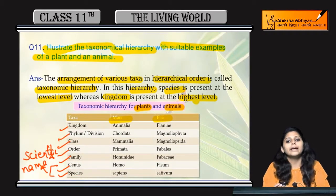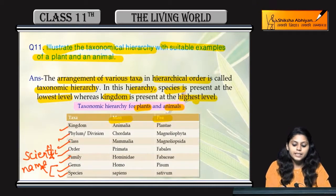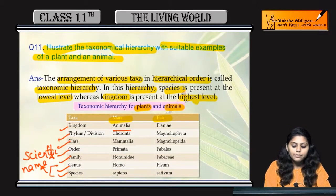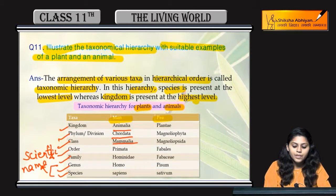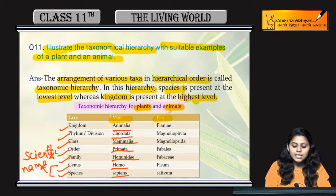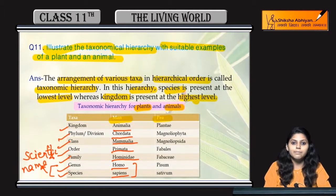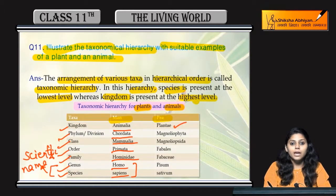For human beings, the kingdom is Animalia, phylum is Chordata, class is Mammalia, order is Primata, family is Hominidae, genus is Homo, and species is sapiens. Therefore, human beings are called Homo sapiens. Next, for pea: the kingdom is Plantae.